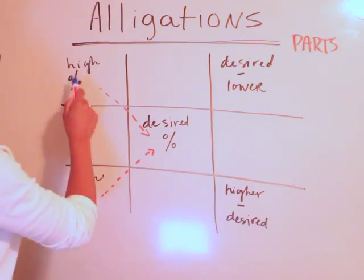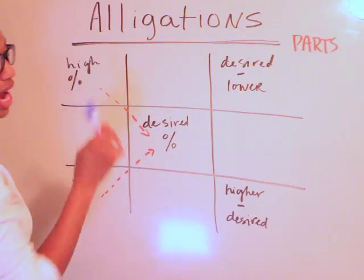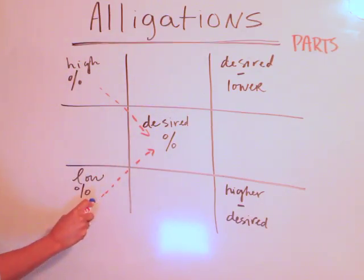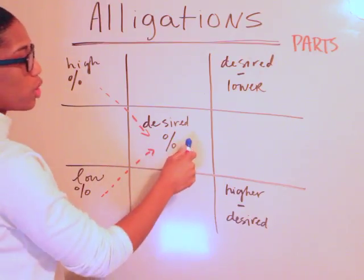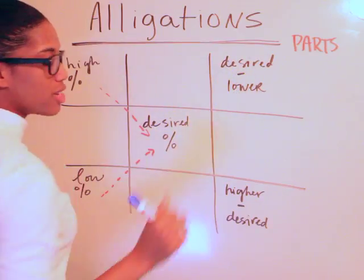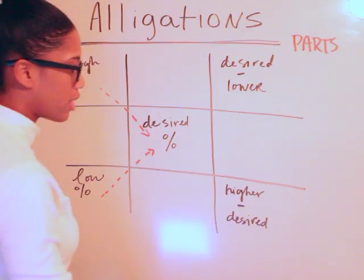This is how it would be with an alligation. You're going to start with the high percentage goes here, so the higher concentration or strength goes here. The low percentage or strength goes here. The desired percentage goes here, and here you have desired minus lower. Here you have higher minus the desired.